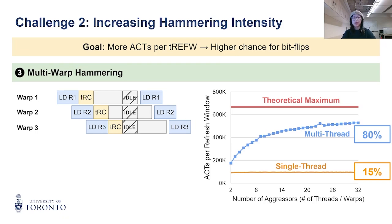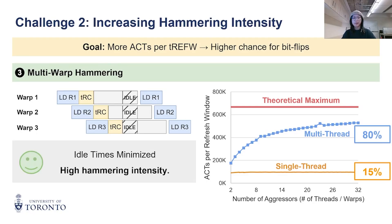This means one warp can send out a second memory request as soon as the first request completes, without waiting for other warps. This further minimizes idle time on the DRAM.